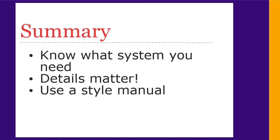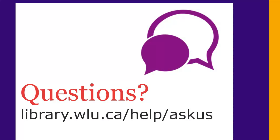That's a summary of both systems in Chicago Style. Make sure you know which one you need to use. As you can see, the small details like punctuation and capital letters make a big difference in both systems, so pay attention to them. There are different rules for different types of sources, so you'll need to use the Chicago Manual of Style to make sure you're citing correctly. You'll find links to that and other citing resources on this page. If you have any questions, please ask us at library.wlu.ca/help/ask-us.